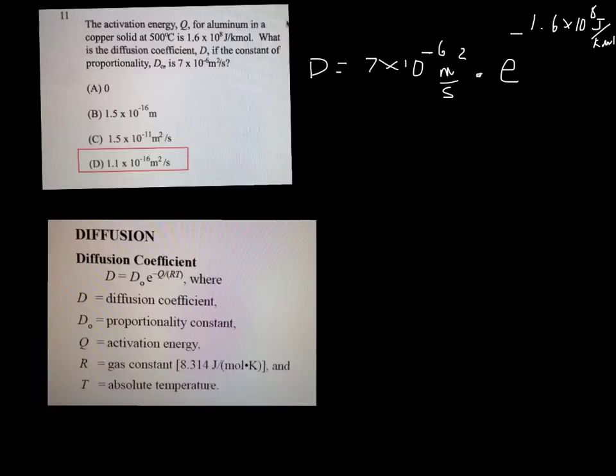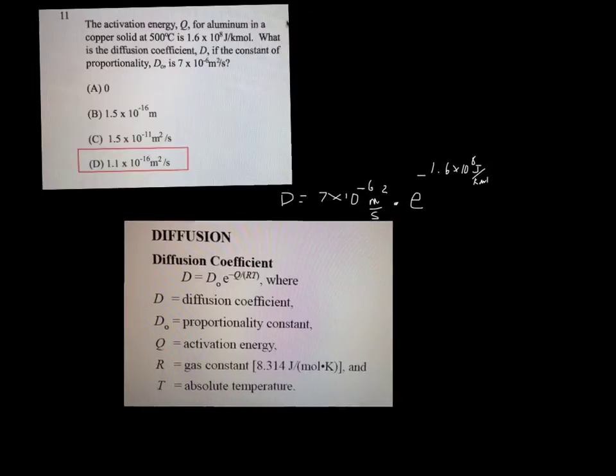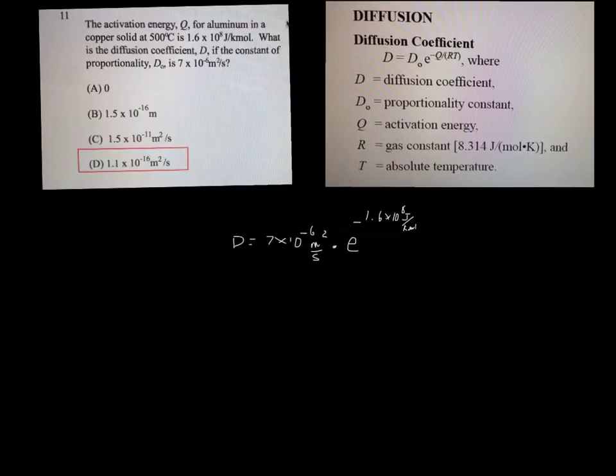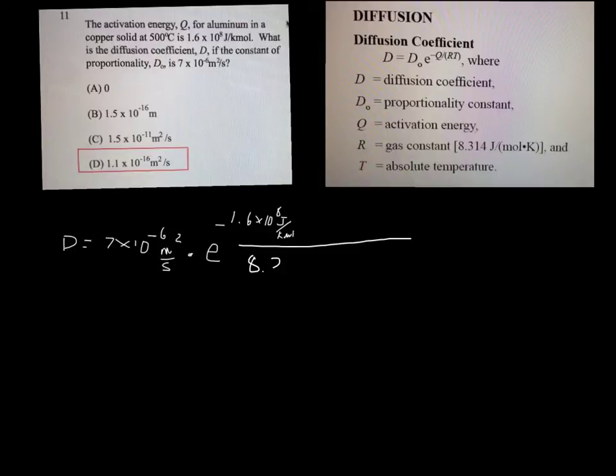That's the Q value and that has to be divided by R, which is given here as 8.314 joules per mole Kelvin, times 773 Kelvin.